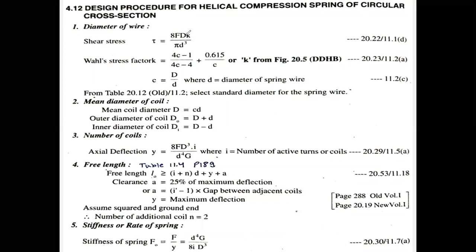The Wahl stress factor K is not given — you need to calculate it. To calculate K, you use the equation: (4c - 1)/(4c - 4) + 0.615/c, which is equation 11.2a in the data book. Once the spring index value C is given, substitute it into the K equation to get K, then substitute K into the shear stress equation to get the wire diameter.